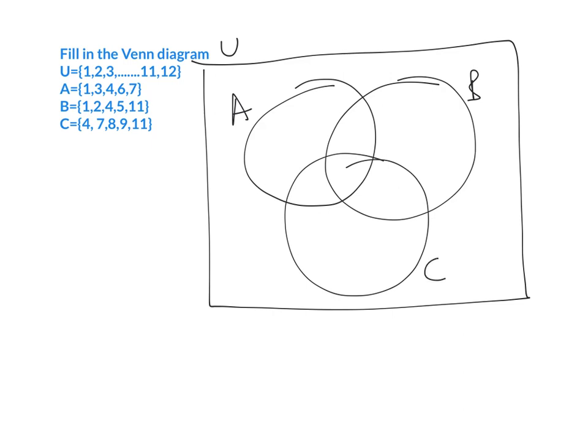The next thing we're going to do is look at A, B, and C and see if there's any numbers that they have in common between all three sets. Looking through that list of numbers, I can see that they have the number four in common. So I'm going to circle that — it needs to go into the intersection of A, B, and C — and then we're going to cross that off so we know we don't write it again.